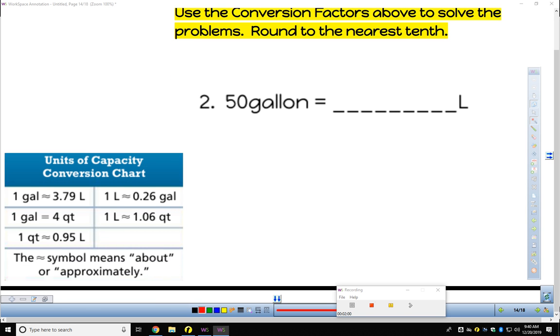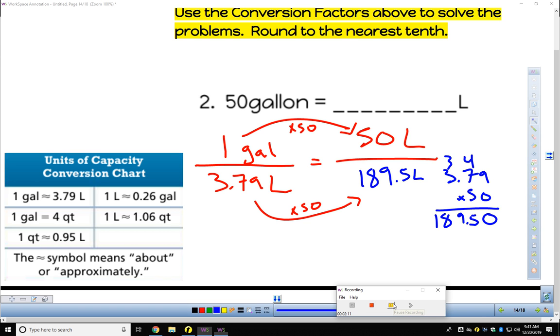Fifty gallons is how many liters? Again, round to the nearest tenths if you should need to. I want you to pause the screen right away and see if you can't solve this one. My conversion factor here, given in my table, one gallon is 3.79 liters.